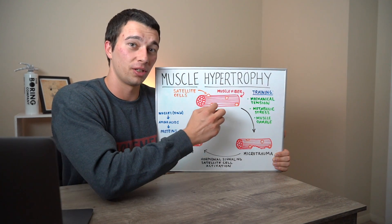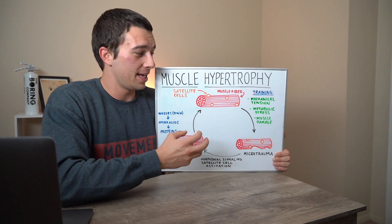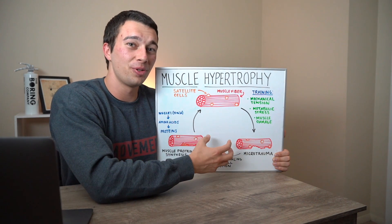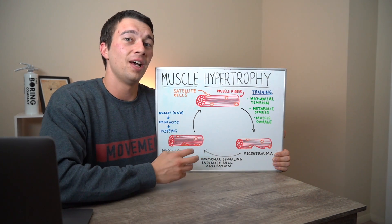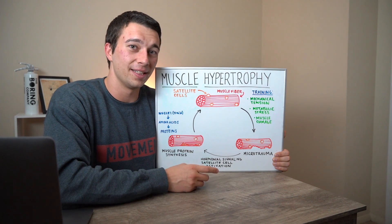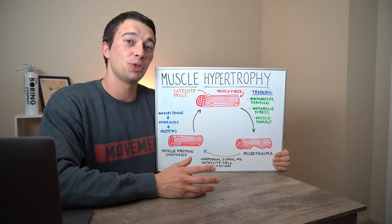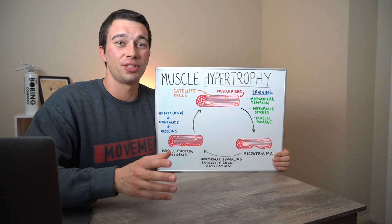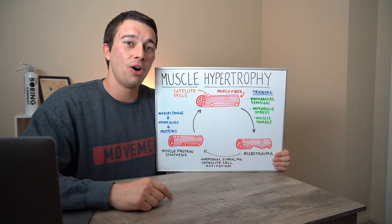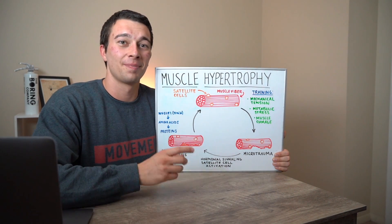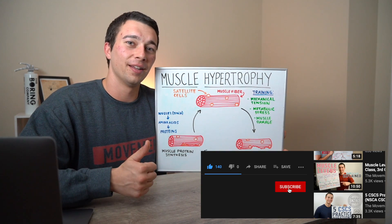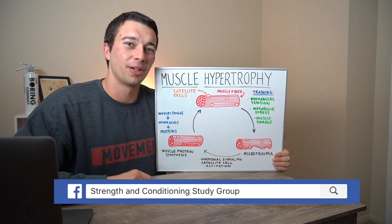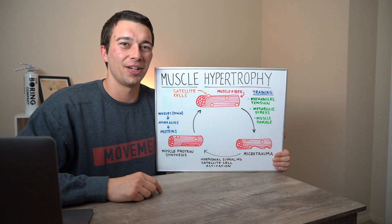Importantly, this isn't the only type of hypertrophy. What I've explained here is myofibrillar hypertrophy — increasing the myofibrils and the active contractile muscle proteins. We could also have sarcoplasmic hypertrophy of non-contractile proteins. If you want me to make a video about the difference between myofibrillar and sarcoplasmic hypertrophy, or about the sliding filament theory, just leave a comment below and I'll do follow-up videos. Make sure to like and subscribe, and join the strength conditioning study group on Facebook. Thanks for watching!